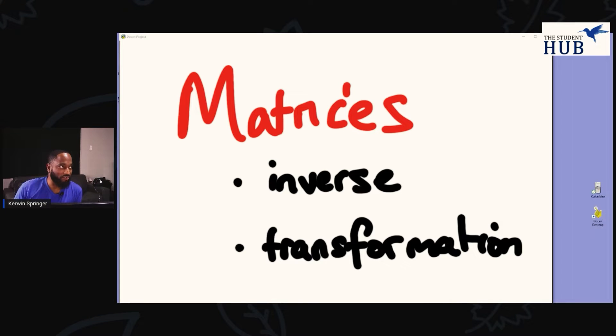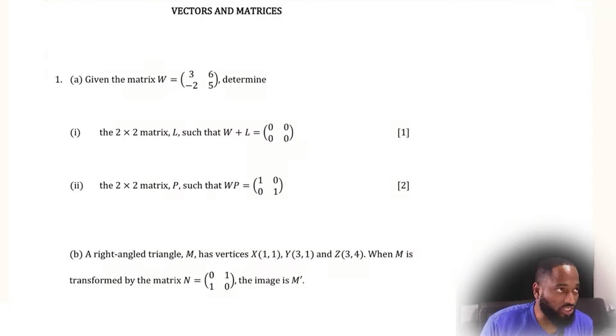Today we'll be looking at matrices and transformation as the subtopics, continuing our journey with the 2021 January paper. Let's jump right into it. Given the matrix W, this is what we call a two by two matrix because it's square—there are two rows and two columns. Determine another two by two matrix L.